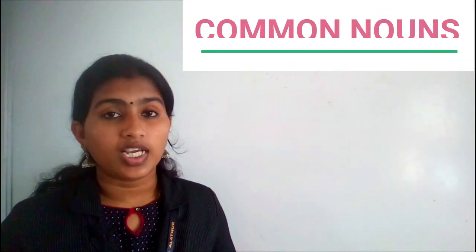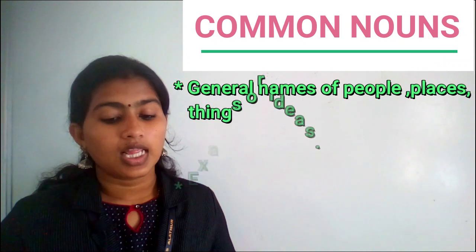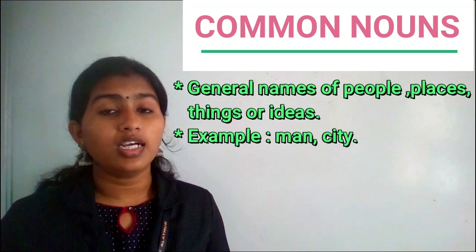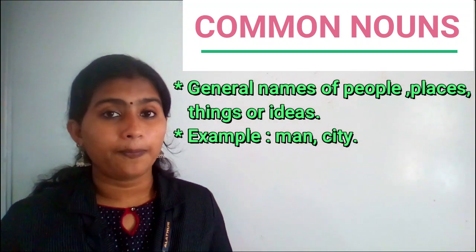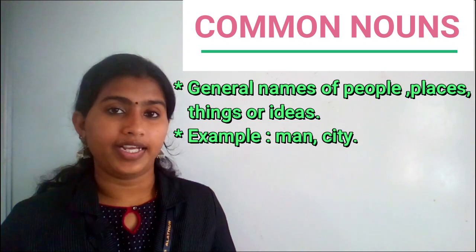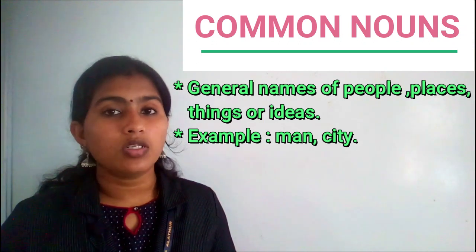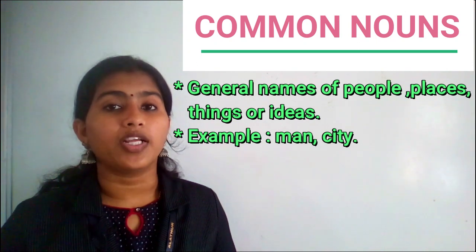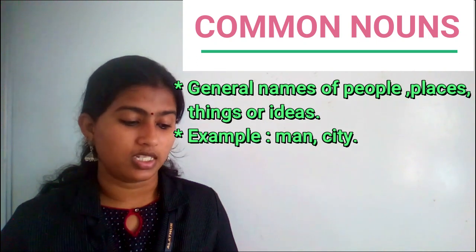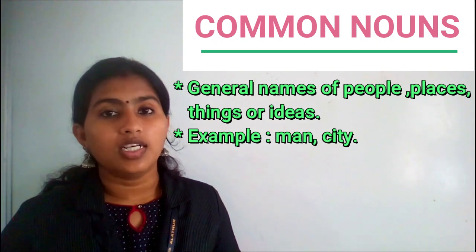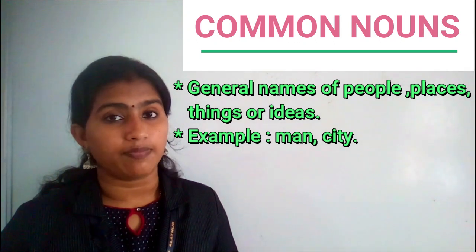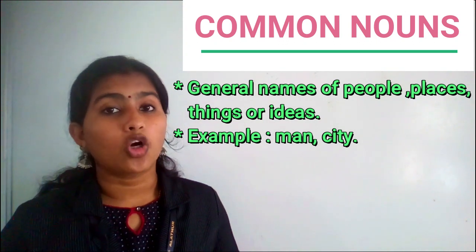Now, common nouns. Common nouns are general names of people, places, things or ideas. Whereas proper nouns name a particular person, particular place or a particular object. Example for common nouns: man, city. Man and city are general names, so they are examples of common nouns.